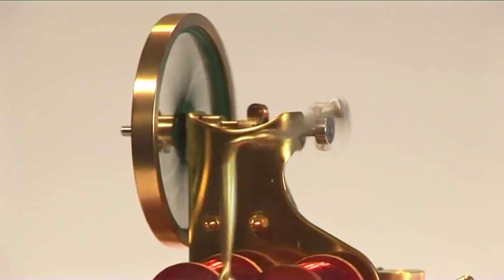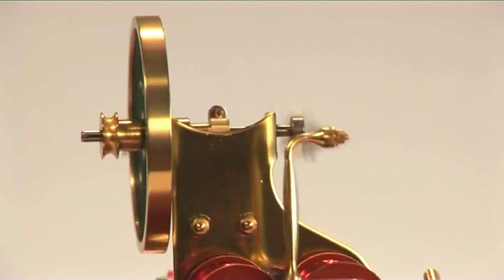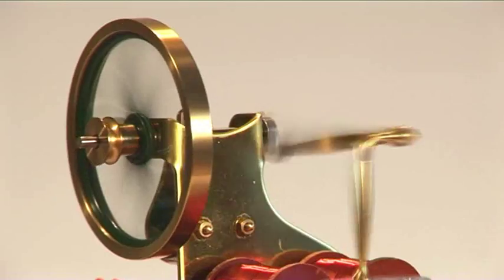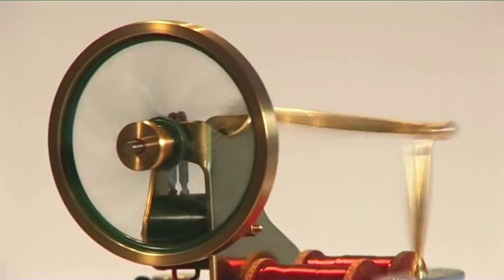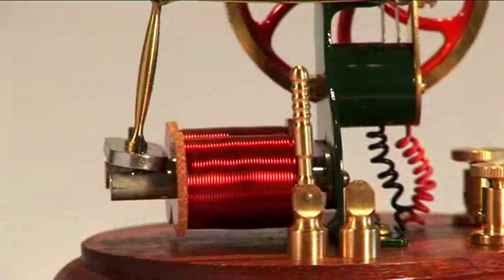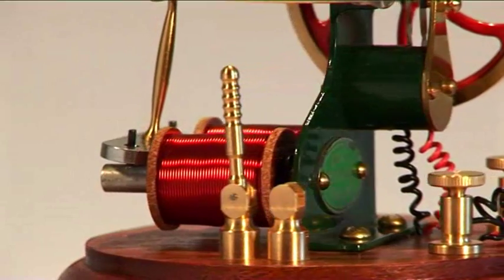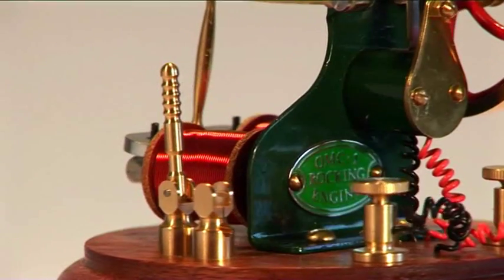This model operates with two power pulses per rotation. Power would have been taken off via the pulley fitted at the end of the output shaft. This model is fitted with a period on-off switch that makes demonstration of the engine much easier.